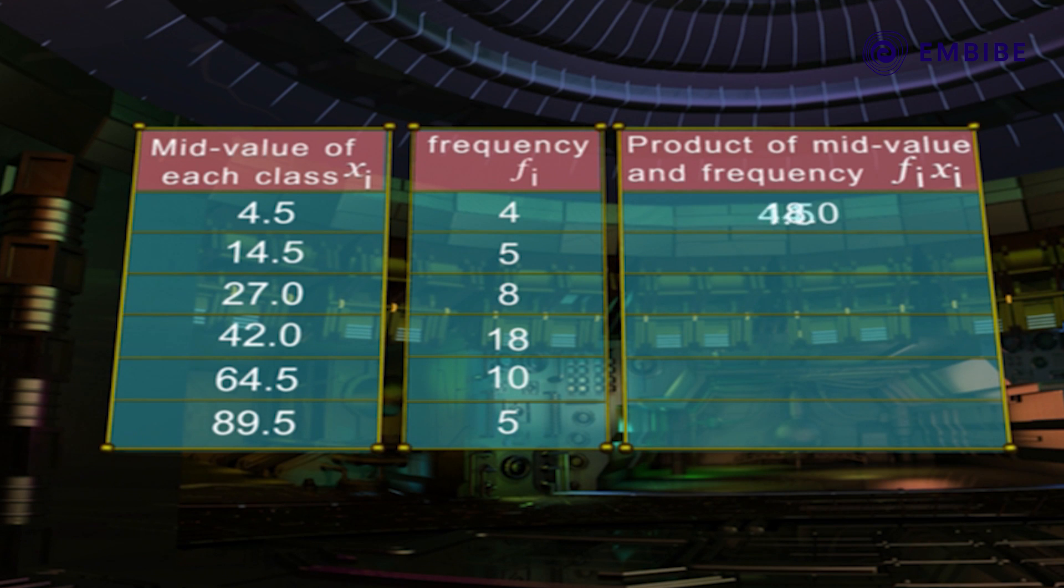4.5 into 4 equals 18.0. 14.5 into 5 equals 72.5. 27 into 8 equals 216.0. 42 into 18 equals 756.0.